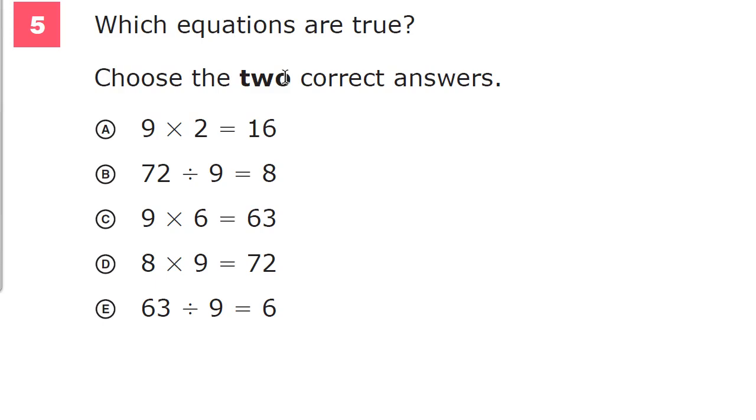So the first question says 9 times 2 equals 16. This is one of those questions where if you know your facts, it will take no time at all. And if you don't, it could be a problem. So let's assume you know your facts. Well, 9 times 2 should be 18. So this is out.